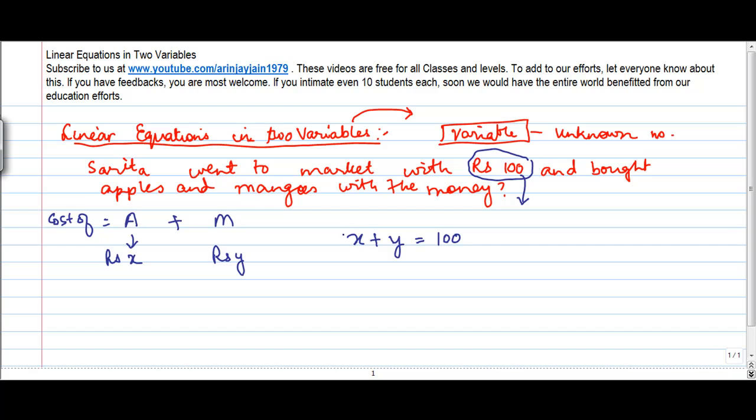Why? Because whatever sum she spent on the apples, which is denoted by x, and whatever she spent on the mangoes, denoted by y, its total is equal to 100. Or we can write this as x plus y minus 100. We move this 100 to the left hand side of the equality, is equal to zero.